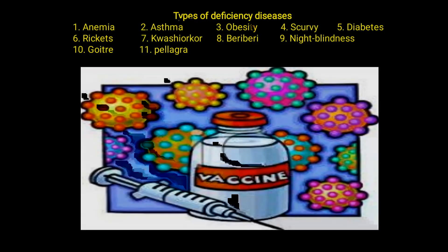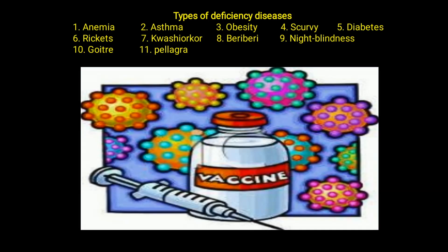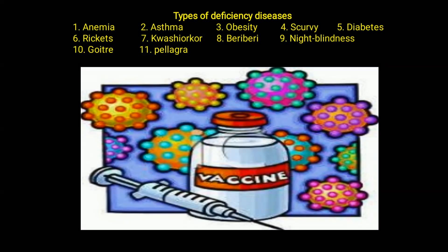Children, let us discuss some of the deficiency diseases: anemia, asthma, obesity, scurvy, diabetes, rickets, kwashiorkor, beriberi, night blindness, goiter, and pellagra.